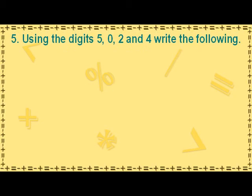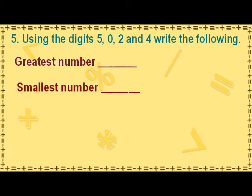Using the digits 5, 0, 2, and 4, write the greatest number and the smallest number. To find the greatest number, we put the greatest digit 5 in the thousands place, the next greatest digit 4 in the hundreds place, the next greatest digit 2 in the tens place, and the last digit 0 in the ones place. In this way, we form the highest number with these digits as 5420.